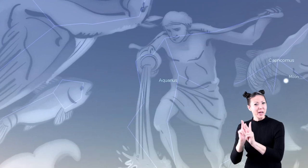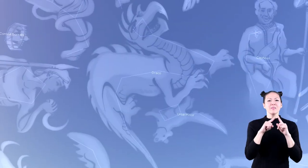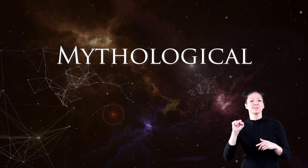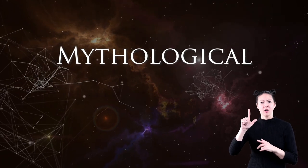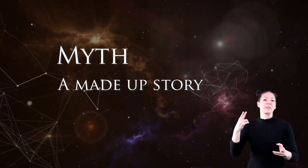The constellations make up shapes of people, animals, and mythological beings. The word mythological comes from the word myth. A myth is a made-up story.